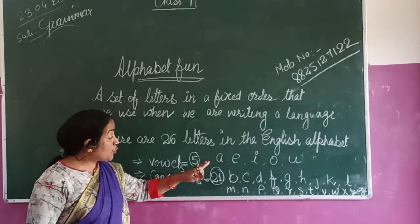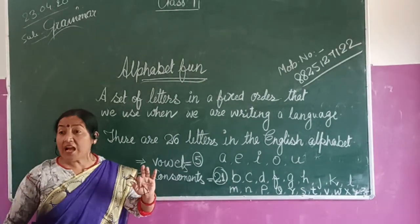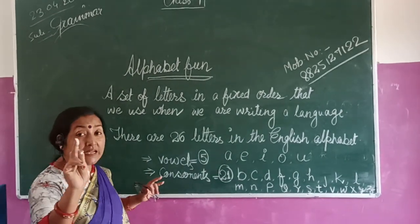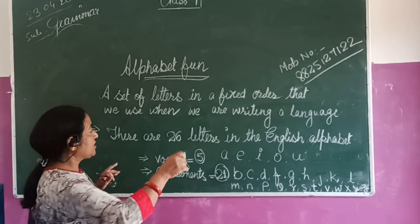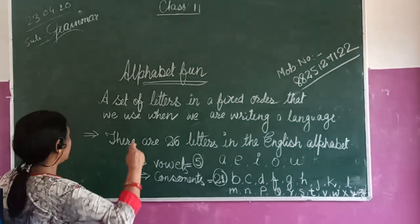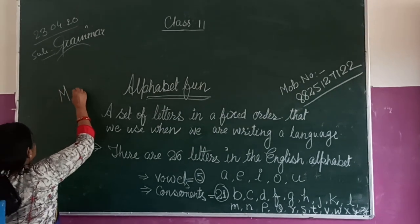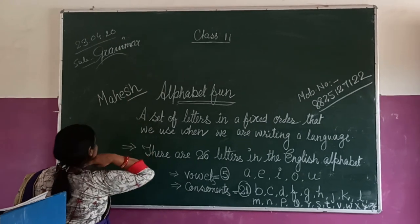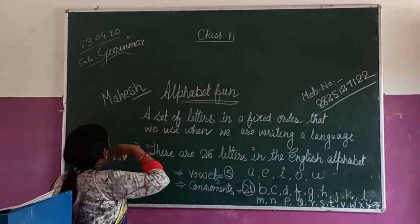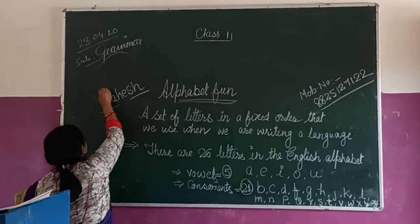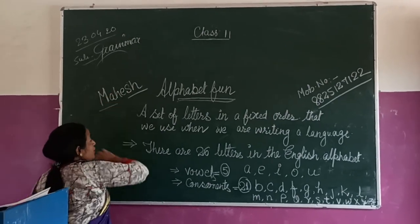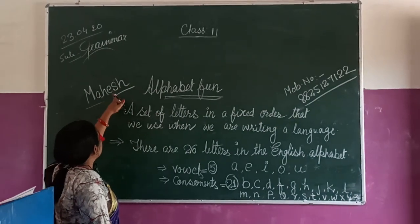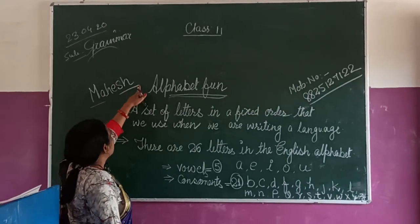There are two types of letters. One is capital and one is small. We use capital letters at the beginning of any name. Just like 'Mahes' — we will write Mahes. The first letter will be capital and after that any letter will be small.